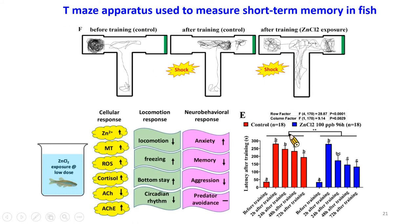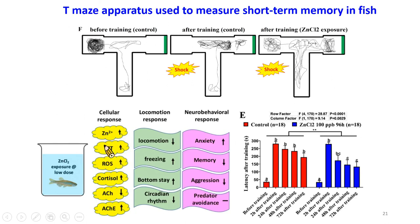Here is the quantification data. In the control group, the memory latency before and after training is very high — the fish memorize correctly on day one, day two, and day three. But after exposure to zinc chloride, the memory declines faster than the control across day one, day two, and day three, showing significant differences tested by two-way ANOVA. The conclusion is: zinc chloride exposure causes dose-dependent increases in brain and tissue zinc content, induction of metallothionein, elevated brain ROS, elevated cortisol stress hormone, decreased acetylcholine, increased acetylcholinesterase, and significant memory loss.